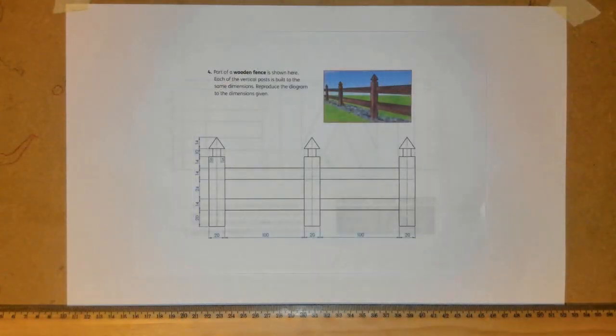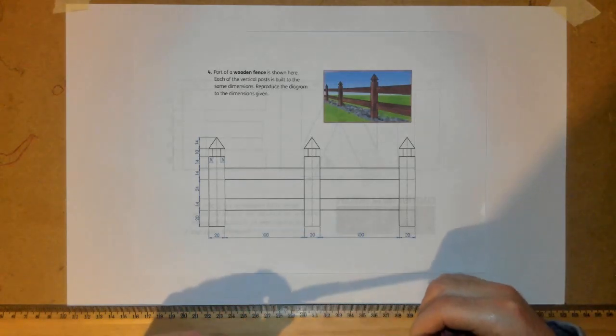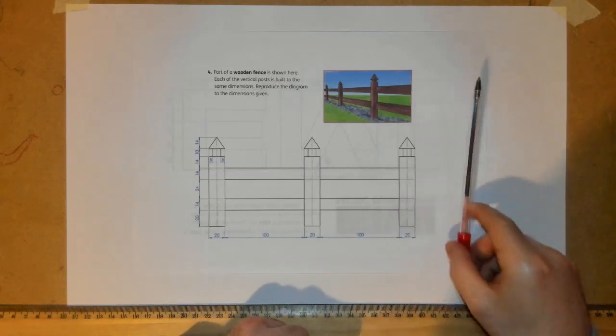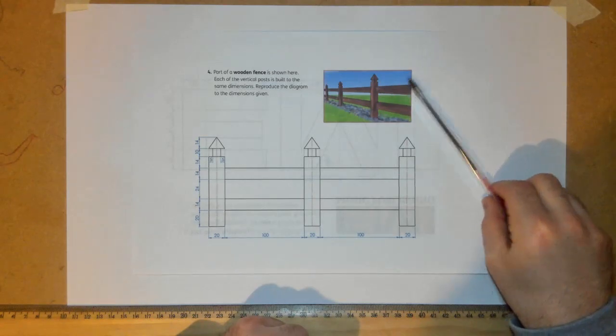Good afternoon folks, so what we're going to do in today's video is a simple question based on a wooden fence. It's actually based on the topic of inclined lines. Inclined lines are lines that are drawn at an angle - they are not perfectly vertical or perfectly horizontal, they are drawn at an angle.